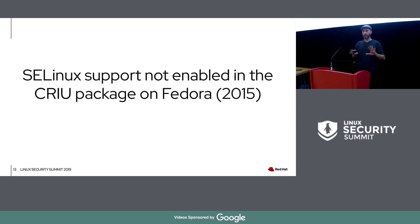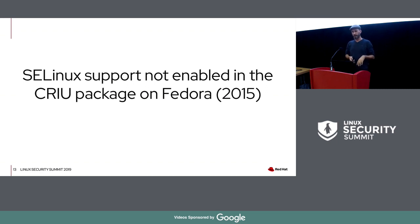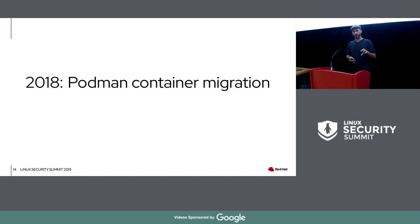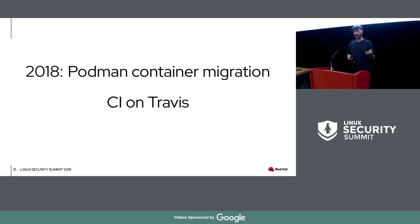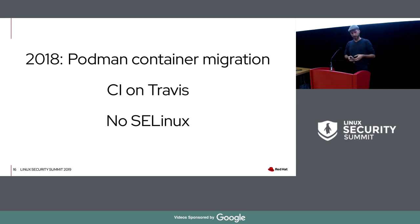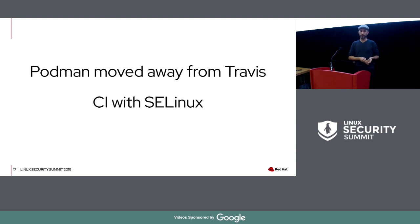CRIU now had some limited SELinux support, but the CRIU package didn't — because I hadn't added the build dependency in 2012. This meant the package in Fedora didn't support SELinux, and when I ported it to RHEL, that package also didn't support SELinux. In 2018 I started working on getting CRIU into Podman for container migration. I wrote a test and it worked because at that time Podman was still running on Travis, which doesn't have SELinux enabled.